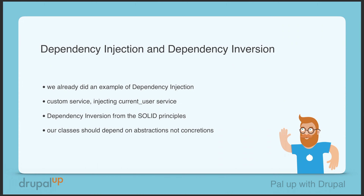In this video we're going to be taking a look at dependency injection and dependency inversion. We already did an example of dependency injection where we created a custom service and injected the current user service into our custom service, but I didn't follow the dependency inversion principle there. Now we're going to learn what dependency inversion from the SOLID principles means, and fix that code. The dependency inversion principle states that our classes should depend on abstractions, not concretions.